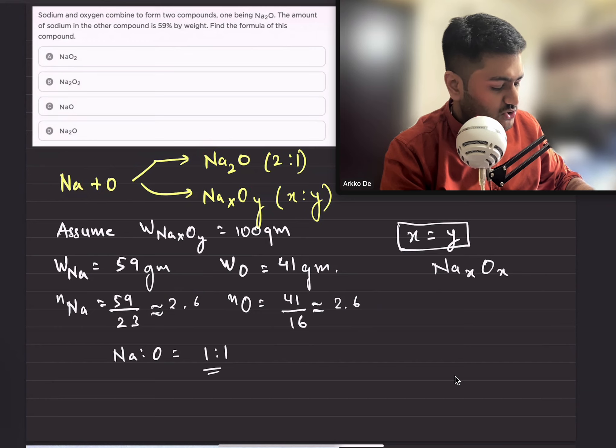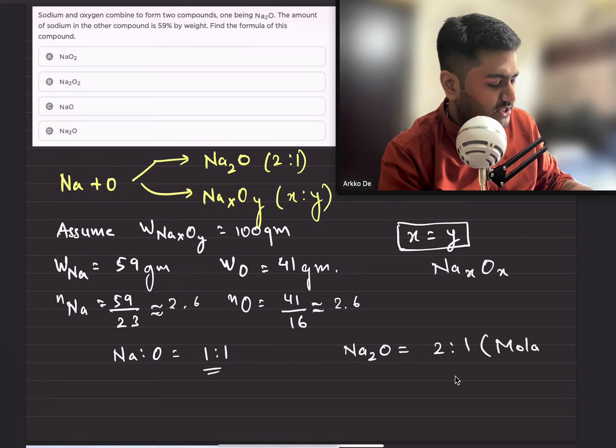and oxygen are in the ratio 2:1. This is a molar ratio. And in the second case, Na_x O_x, the ratio is 1:1.